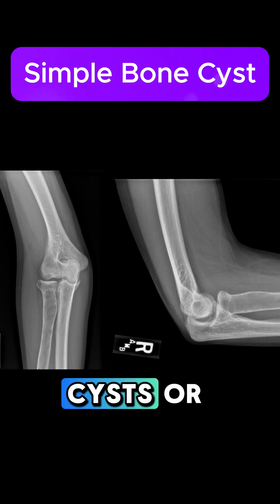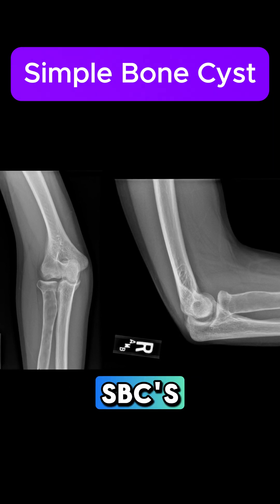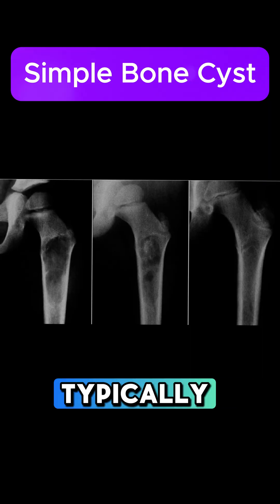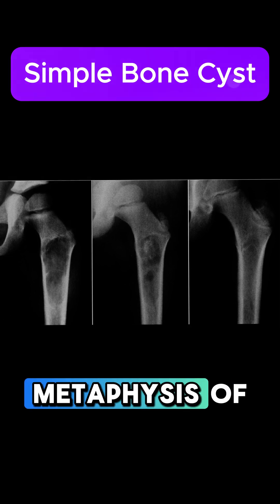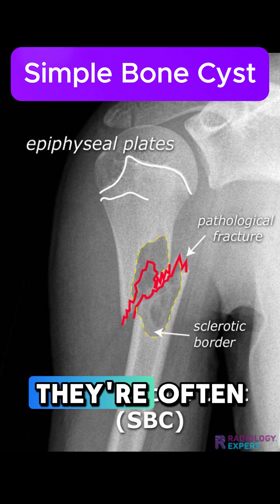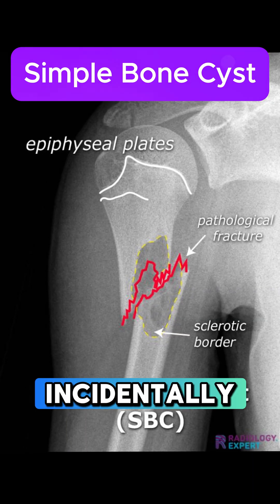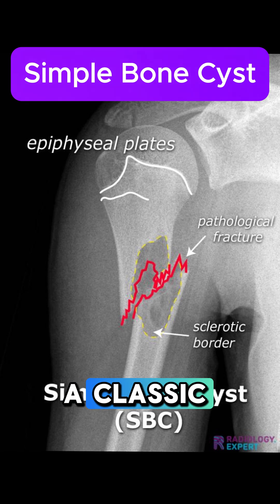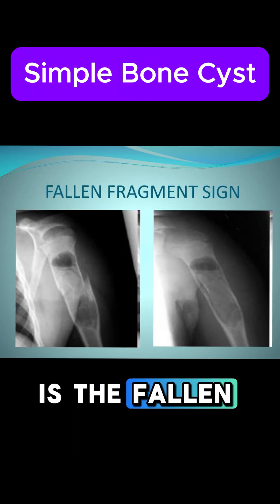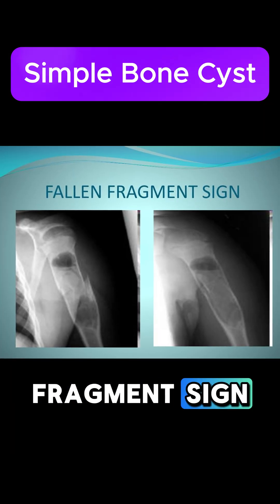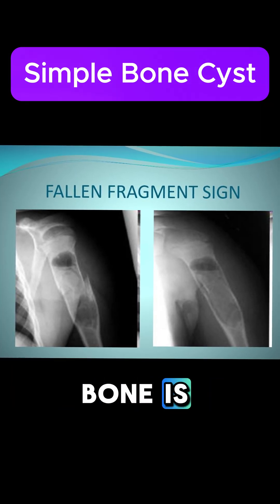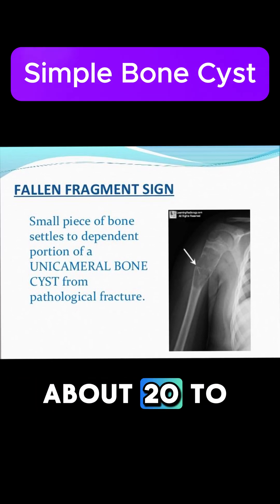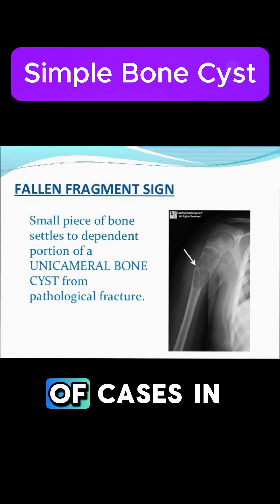Let's discuss simple bone cysts, or SBCs — benign, fluid-filled lesions typically found in the metaphysis of long bones. They're often discovered incidentally or when a pathological fracture occurs. A classic radiographic feature is the fallen fragment sign, where a piece of fractured cortical bone is seen within the cyst cavity, occurring in about 20 to 25 percent of cases.